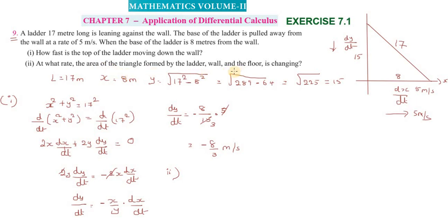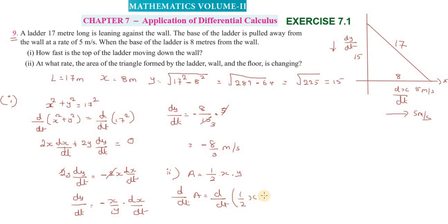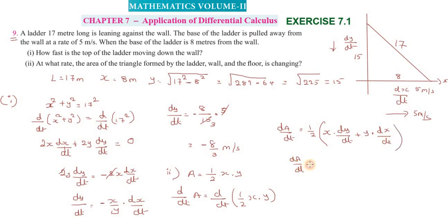For the second part — the rate of change of the area of the triangle — the area formula is A = ½ × x × y. Differentiating with respect to t using the product rule: dA/dt = ½ × (x × dy/dt + y × dx/dt).